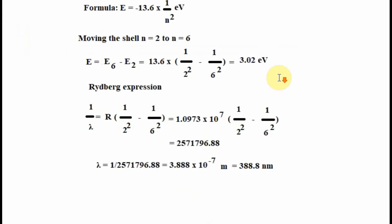So we have the formula. That is E equals minus 13.6 multiplied by 1 over n squared eV. So moving the shell from n equals 2 to n equals 6.